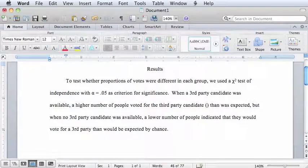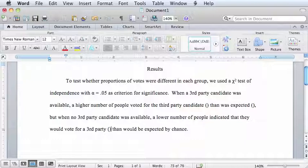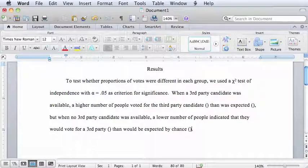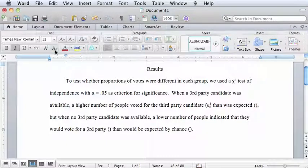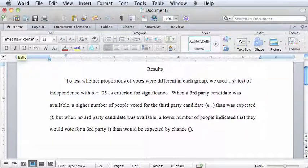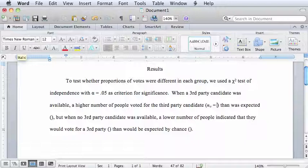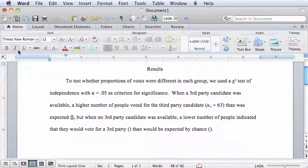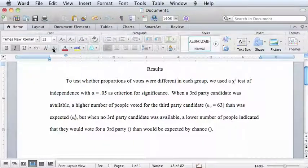After doing this, you can go back and add the appropriate statistics in parentheses after the words that describe them. Eventually you will become used to the format, and you can type the statistics in text directly as you type out the sentence. Subscripts can be helpful for labeling statistics as belonging to certain groups, or as observed versus expected counts.